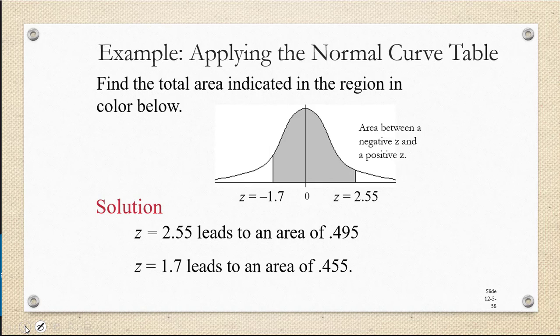Now what do these represent on our diagram? Well remember, each of these is the area between 0 and the given z-score. So the area between 0 and 2.55 is 0.495, and the area between 0 and negative 1.7 is 0.455.